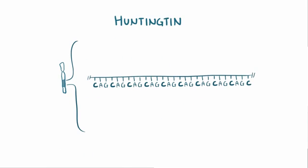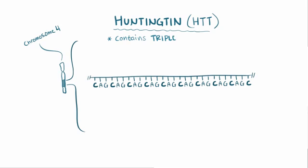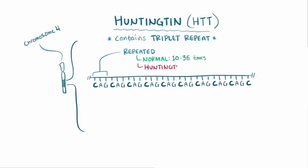In most people, a gene called Huntington, or HTT, on chromosome 4 contains a triplet repeat, where nucleotides C, A, and G are repeated 10 to 35 times in a row. In people with Huntington disease, this repeat goes on for 36 or more times in a row.